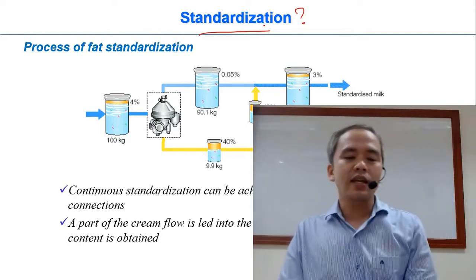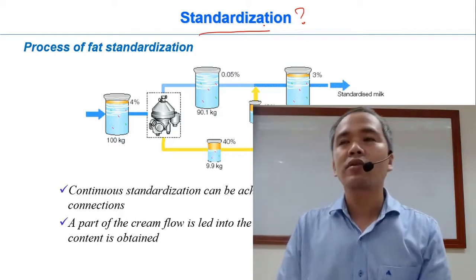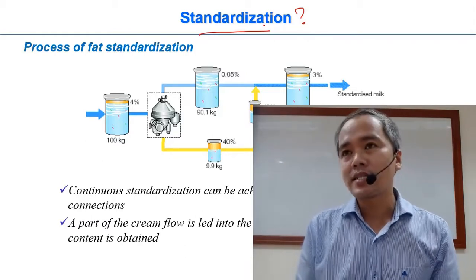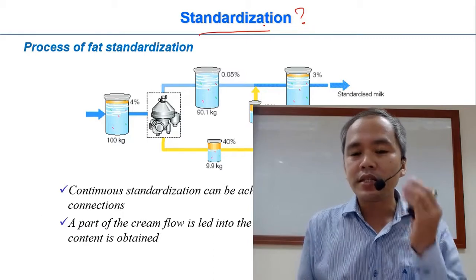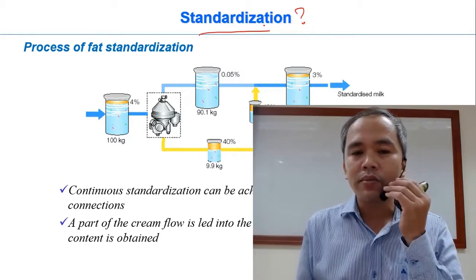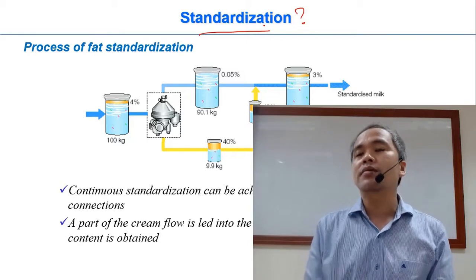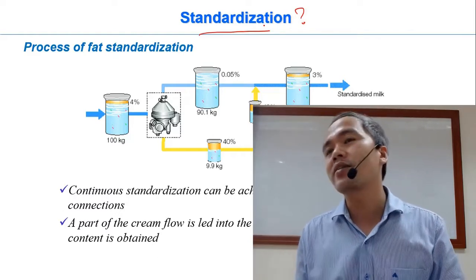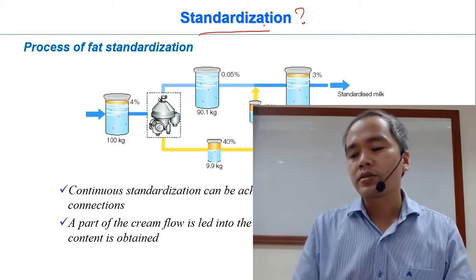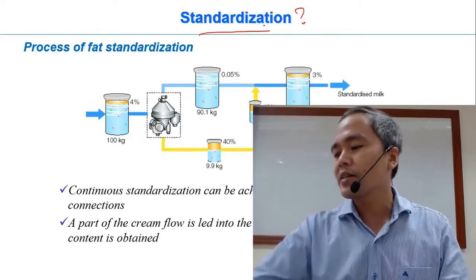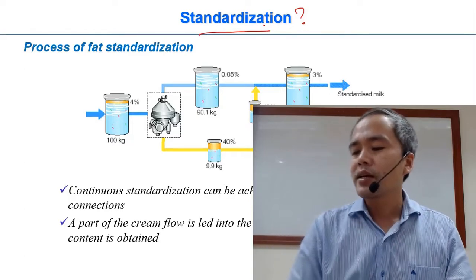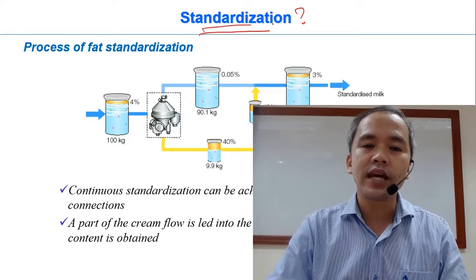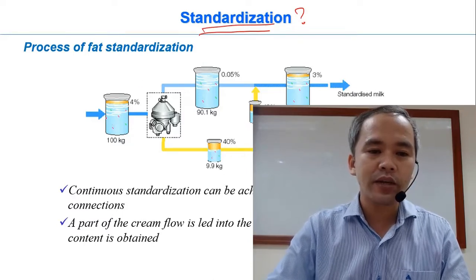From animal to animal, from farm to farm, the fat content of milk is not the same. So if we just use that raw milk to process milk and dairy products, then the fat content is varying time to time. So in order to remove that factor and make a consistent fat content, we have to do this step: standardization.